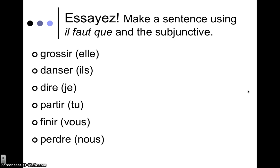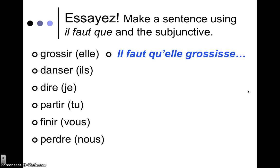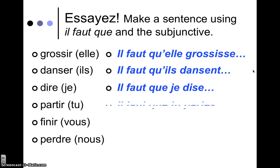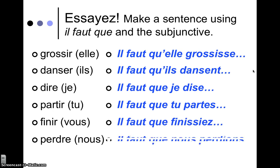Give these six verbs a shot — pause the video and see if you can make a sentence with 'il faut que.' Here we go. 'Il faut qu'elle grossisse.' 'Il faut qu'il donne.' Notice the ils/elles plural form is the same in the present indicative and the present subjunctive. 'Il faut que je dise' — remember that the ils plural form of 'dire' is 'd-i-s-e-n-t.' 'Il faut que tu partes.' 'Il faut que vous finissiez.' Et 'il faut qu'on perde.' Voilà.